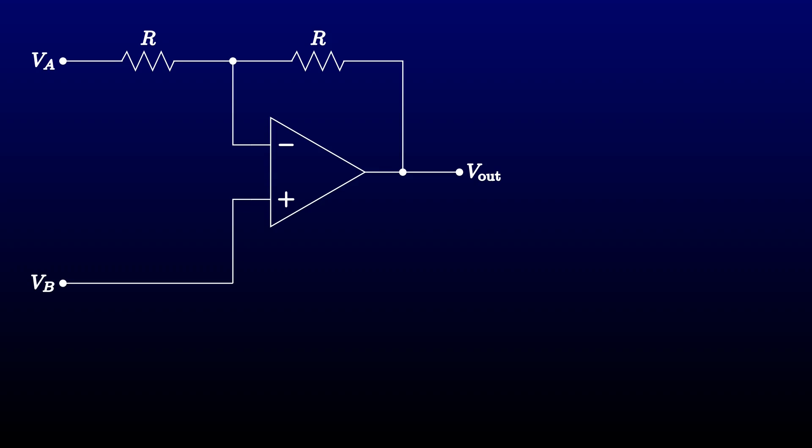Well, without doing a complete analysis yet, let's just try grounding the inverting input. You might recognize this circuit as the non-inverting amplifier from episode two. The divider ratio for the feedback network is one to two, so the amplifier's gain is two. That's the wrong answer. A difference amplifier would need to have a gain of one.